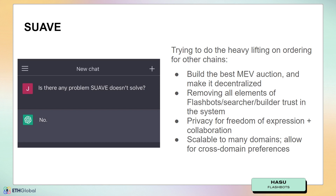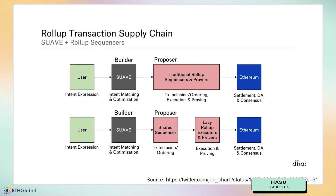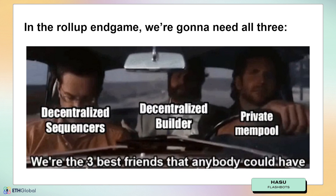Making it private so that participants have the ability to trust the auction and trust others, and don't have this need to vertically integrate with others in the supply chain. And making it scalable, because by connecting many different domains, we allow for the expression of cross-domain preferences as well. John Charbonnet, our host, has this great diagram that shows the rollup transaction supply chain in the future — the sequencer really becomes the proposer, and you can have proposers that sequence many chains, but you still need the block builder to be decentralized.